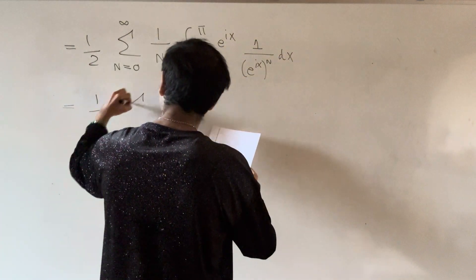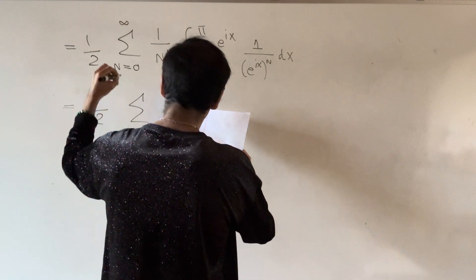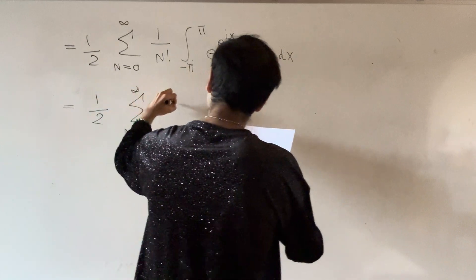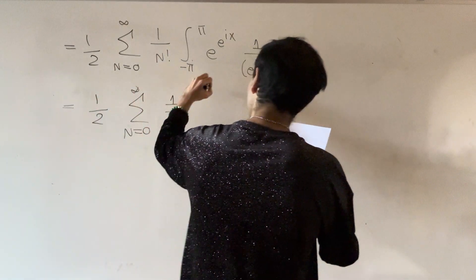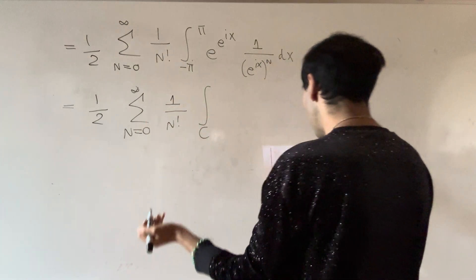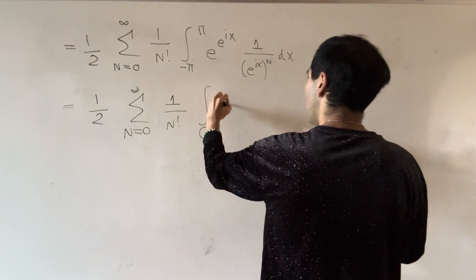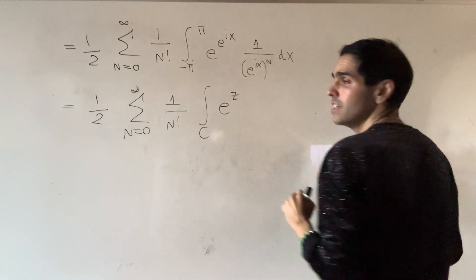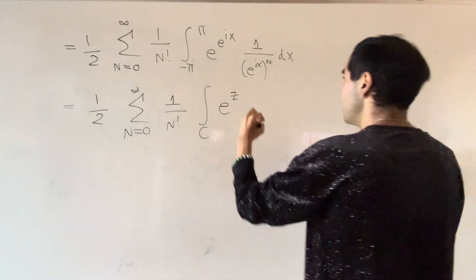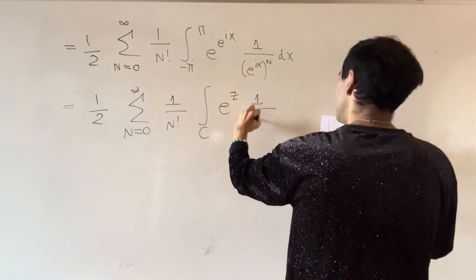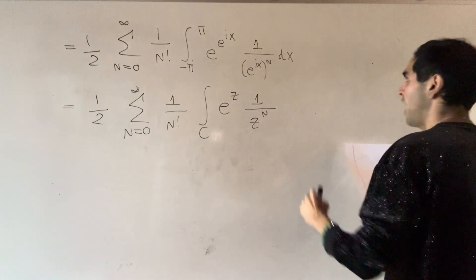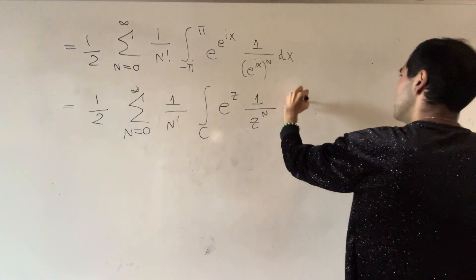So, one half, sum from zero to infinity, of one over n factorial, integral over that circle, of e to the z, because z was e to the i x, and then one over z to the n, and then we had our dz over iz.